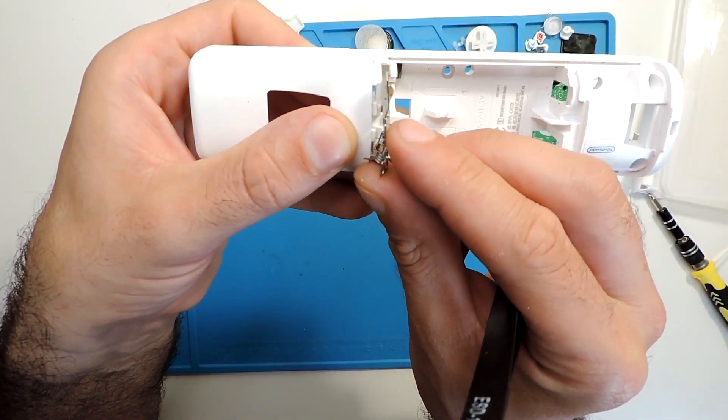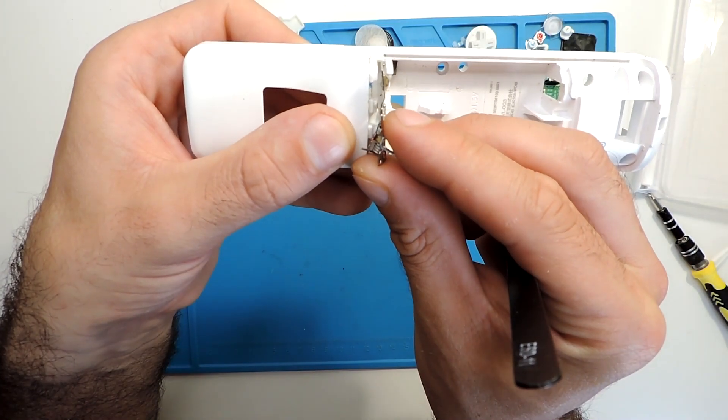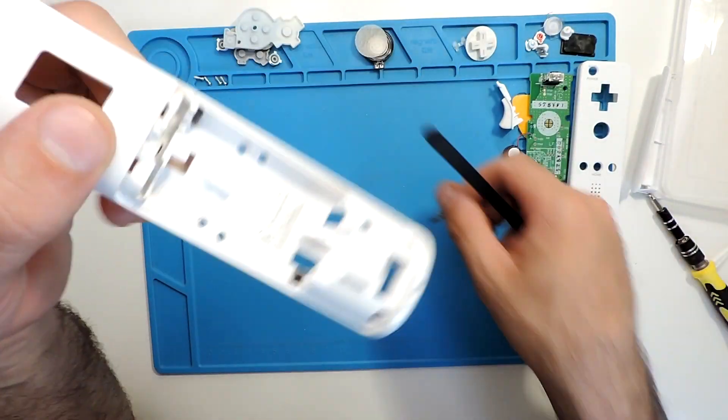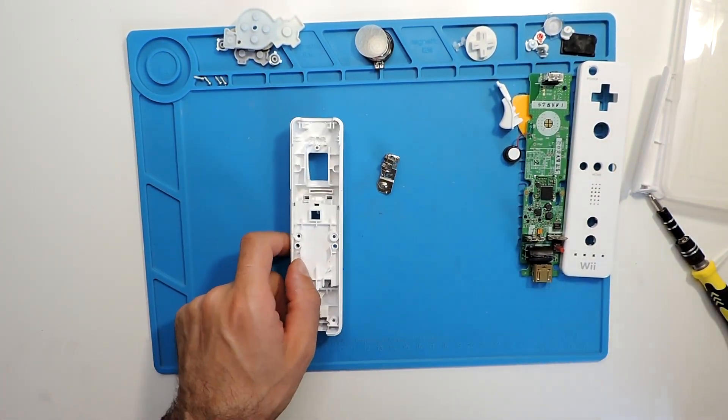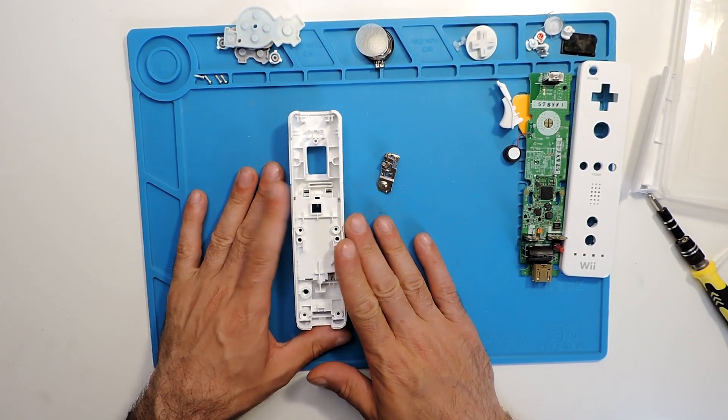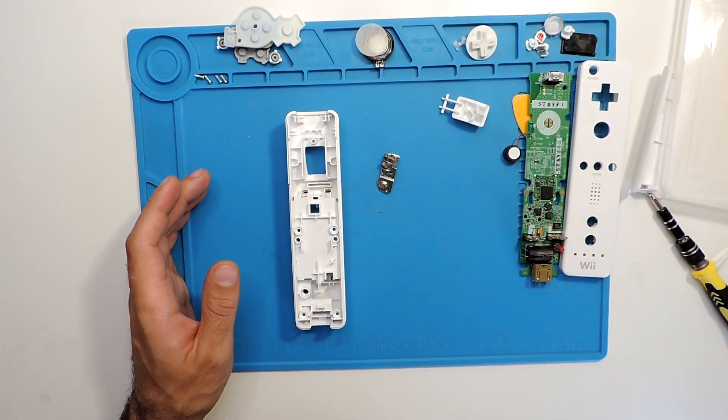It's like that under the plastic—just move it a bit to the front and then pull it up. This is how you take apart the Nintendo Wii controller. There's nothing more to disassemble, it's pretty straightforward. That's it.